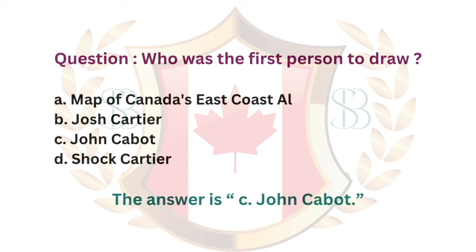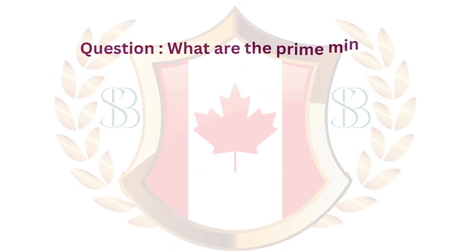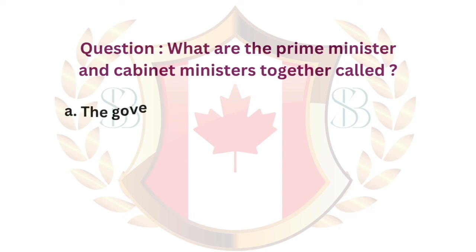Question. Who was the first person to draw a map of Canada's east coast? The answer is c. John Cabot.